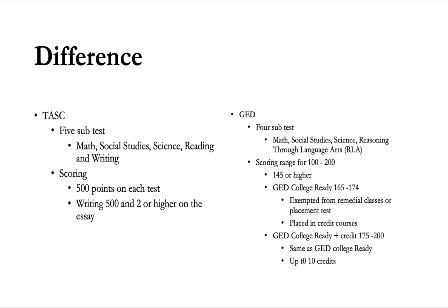The scoring range for GED is 100 to 200. Back in the day with the old GED you had to get a 410, but here their scoring ranges between 100 and 200. If you want your GED, your score has to be 145, so that's the minimum—145 or higher to earn your GED diploma.